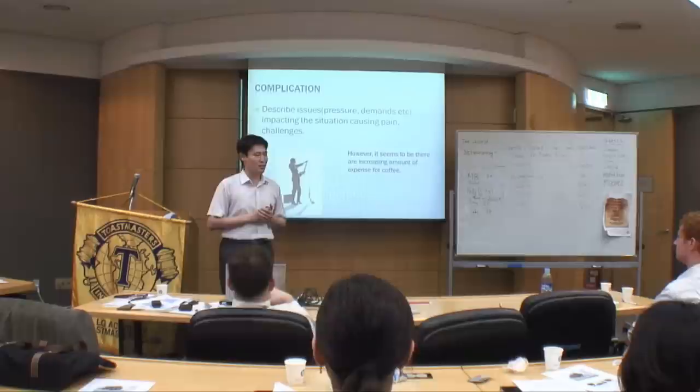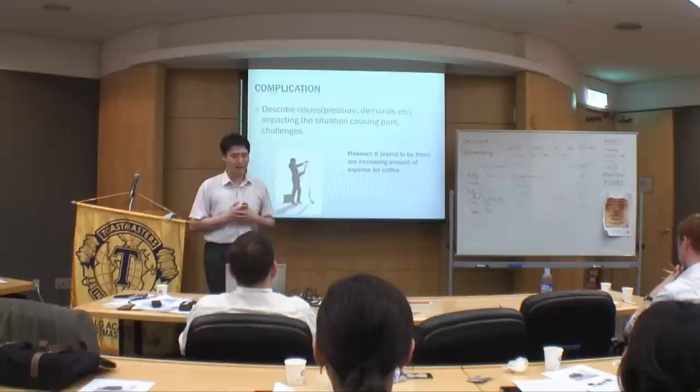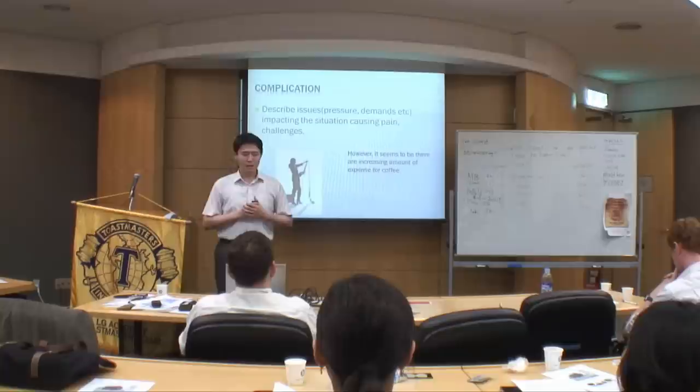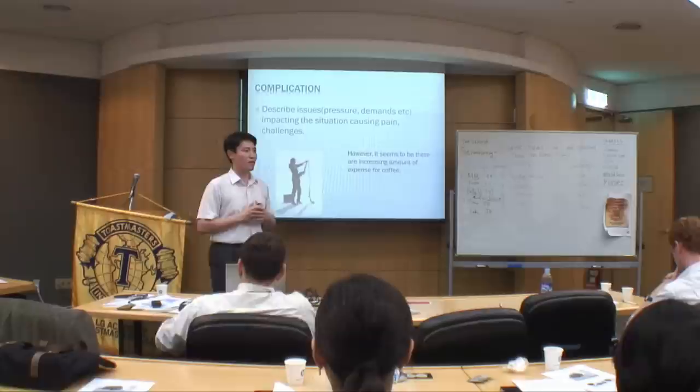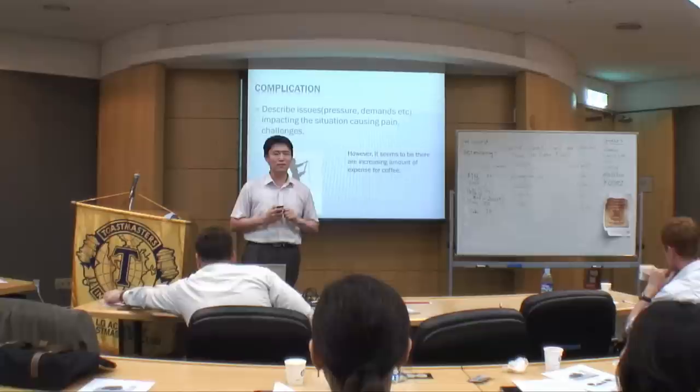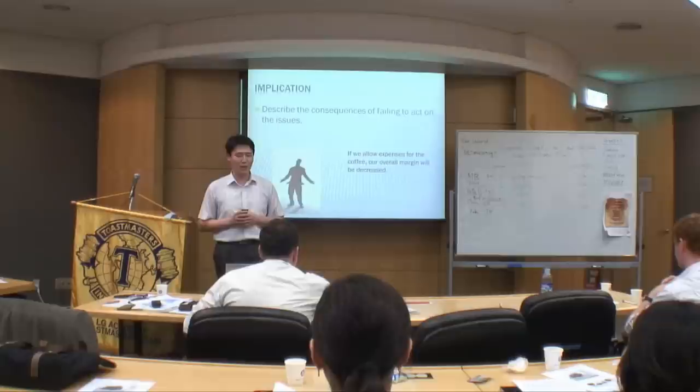The next stage is about complication. In a complication, we describe the issues such as pressure or demand that are impacting the situation. So in the example, there is an increased amount of reimbursement as a welfare coffee expense. The manager has to grasp the idea that this is causing lots of issues.